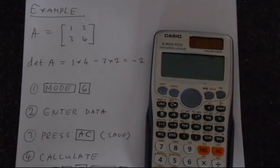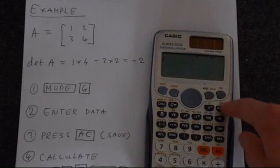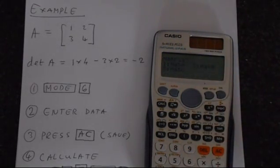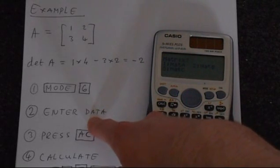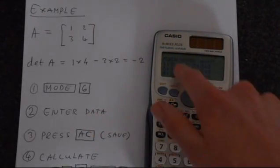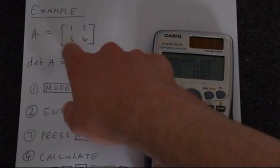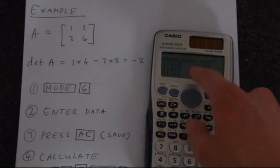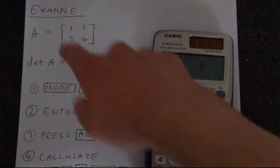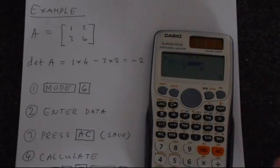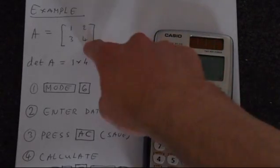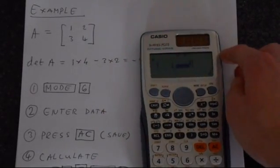First thing we do is put the calculator in the correct mode. We press mode and then 6 for matrix. We need to enter the data into matrix A. This is a 2 by 2 matrix, so we select the 2 by 2 option, which is number 5. Then we enter the values: 1 equals, 2 equals, 3 equals, 4 equals — so we've got this matrix entered into the calculator.